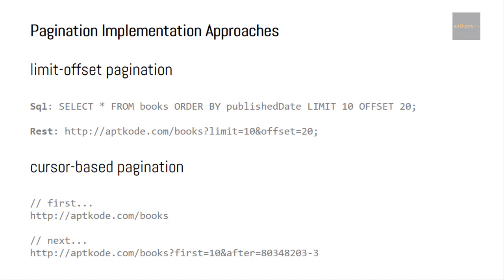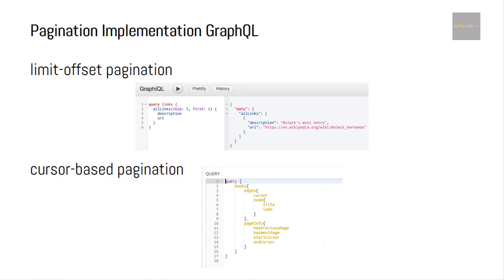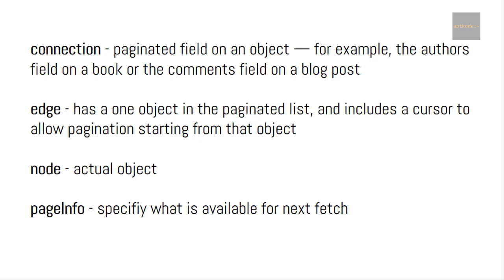We also need some additional concepts around cursor-based pagination. A connection is a paginated field on an object — for example, the authors field on a book, or the comments field on a blog post. In limit-offset pagination we have skip and first parameters, but in cursor-based pagination we have edges, cursor, node, and page info. An edge is an object in the paginated list, and it includes a cursor so we can identify where the pagination starts from for that object.